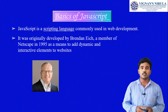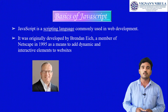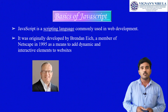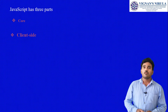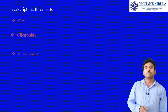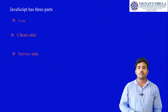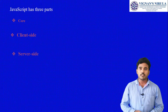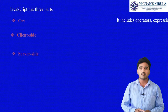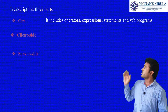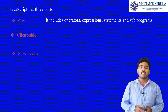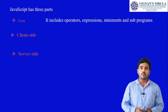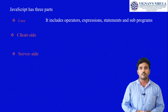JavaScript is a scripting language which is commonly used in web development. JavaScript consists of three parts: core side, client side, and server side. The core consists of operators, expressions, statements, and subprograms.